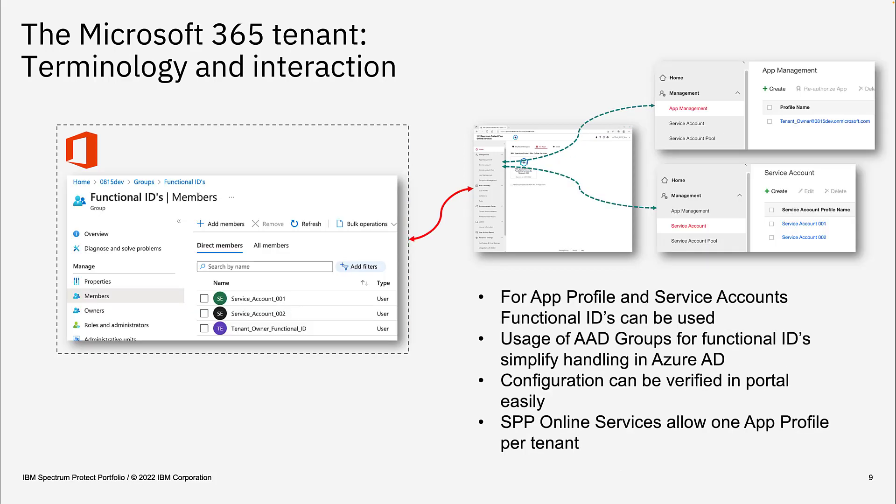A customer would typically set up functional IDs to be connected for the Spectrum Protect Plus Online Services. This has the benefit that a functional ID can stay forever. If the customer uses a regular user account instead and that user leaves the company, the account gets deleted and backup and restore would no longer be possible. To prevent this, it is recommended that customers use functional IDs with a tenant owner and global admin role for the general connection between the portal and Microsoft.